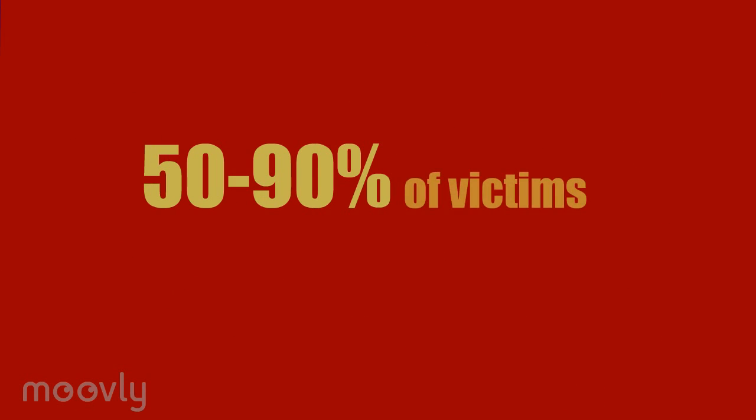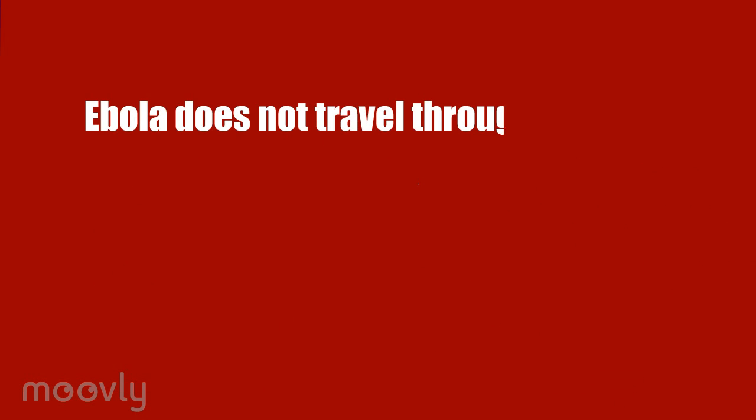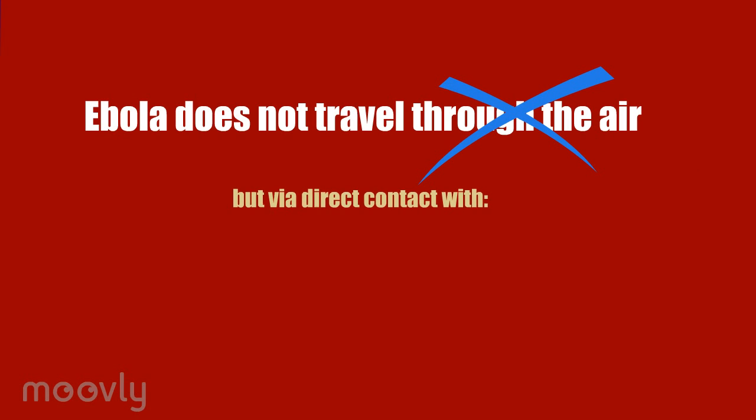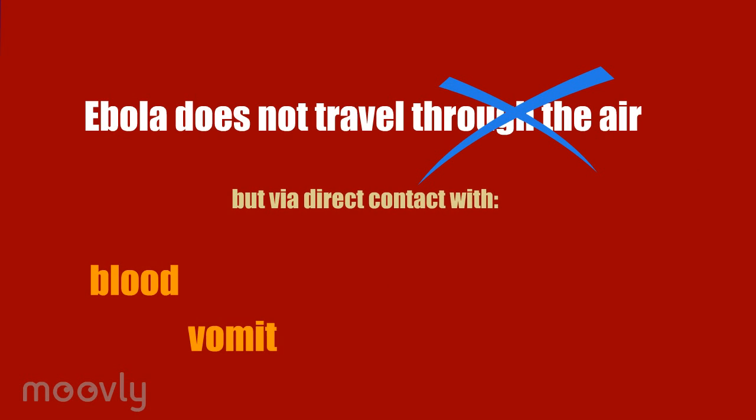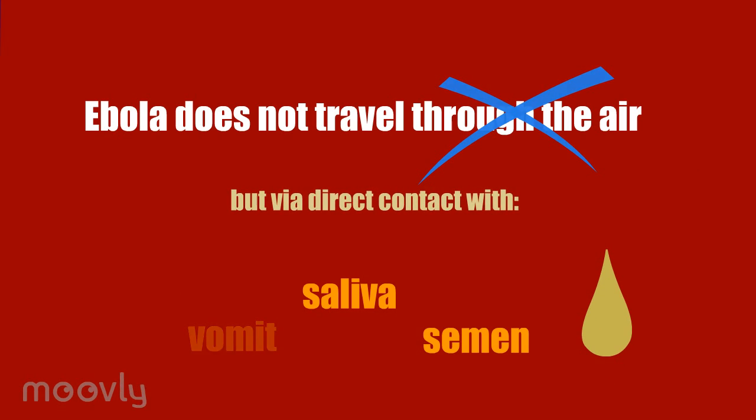Ebola evolves fast. 50 to 90 percent of the victims die within one to two weeks. Ebola does not travel through the air like flu. It spreads through direct contact with blood, vomit, saliva, semen, or other bodily fluids of an infected person.